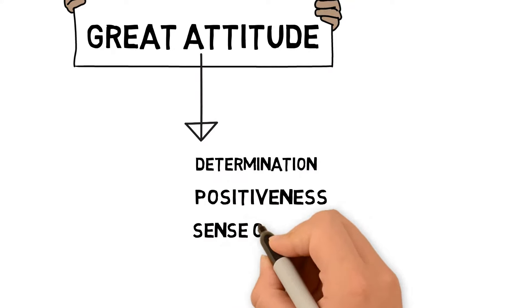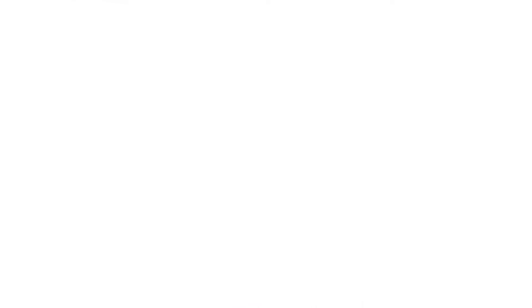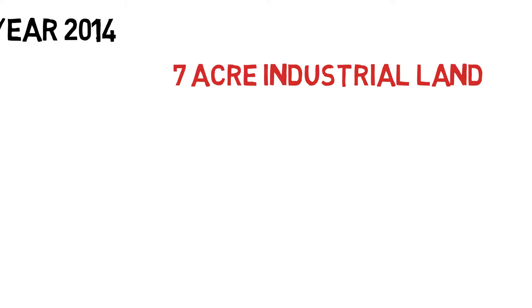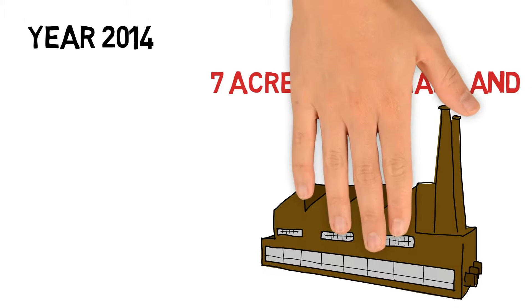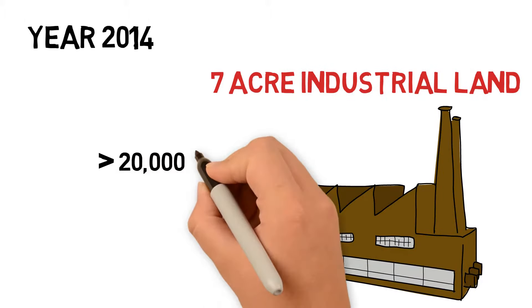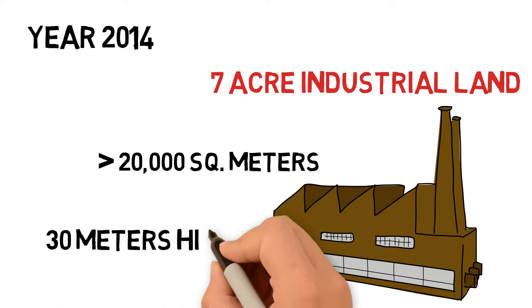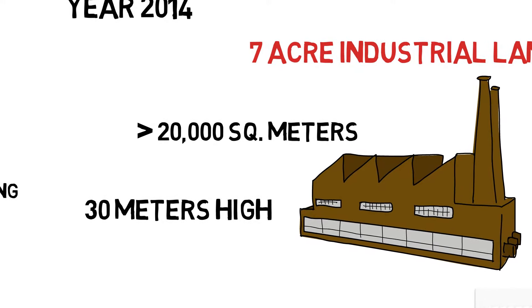In 2014, a 7-acre industrial land was acquired by Handy Imports, with the purpose of building a warehouse that is more than 20,000 square meters in built space, 30 meters high, and with a yard that can accommodate more than 50 containers at once.